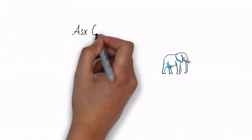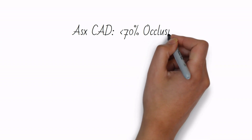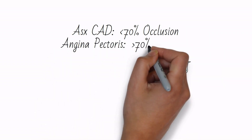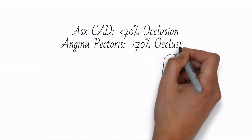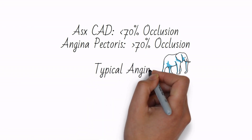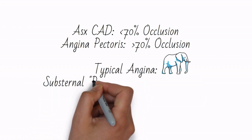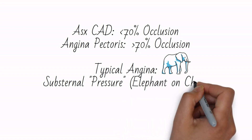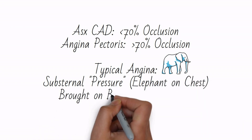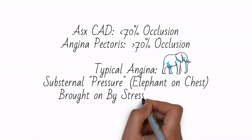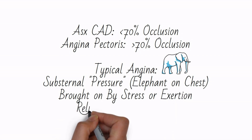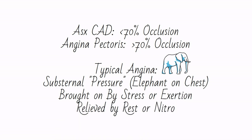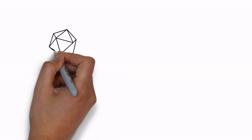The patient will likely be asymptomatic until a 70% or greater occlusion forms. Until this time, the patient has asymptomatic coronary artery disease. The patient will usually present with chest pain called angina pectoris. Typical chest pain is substernal pressure brought on by exertion and relieved by rest or nitroglycerin. If not all three are present, the angina is atypical.